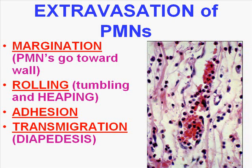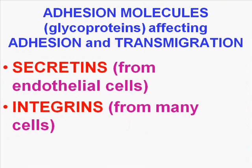You have to remember these four separate processes and their proper order. There are a variety of adhesion molecules, which are all glycoproteins, triggered to help this process of adhesion and transmigration. They are generally in the family of selectins and integrins. Selectins are secreted from basically endothelial cells; integrins are expressed on many, many cells. For the purposes of general pathology, just remember that selectins and integrins are crucial in white cell adhesion and transmigration.